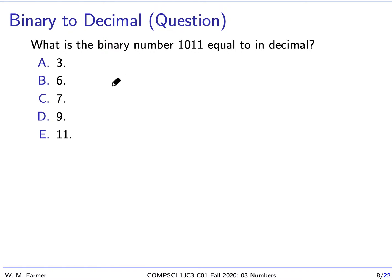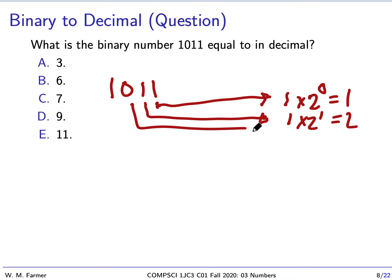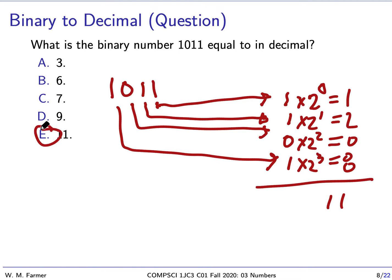Let's work it out. This is our number in base two. I'm going to start from the right. This will be one times two to the zero, which equals one. Then this is one times two to the one, which equals two. This is zero times two to the two, which equals zero. And then this is one times two to the three, which equals eight. We add those up. We get eleven. That's the answer.